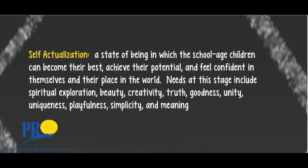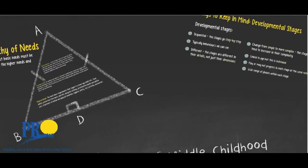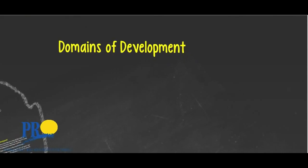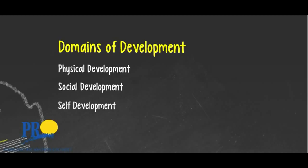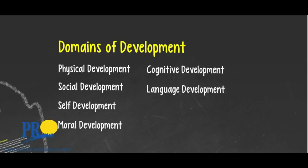We now know that children develop in predictable stages that are progressive, and also that children are individuals who develop at their own rates, influenced by many things: genes, basic needs being met, supportive adults present in their lives, positive peer relationships, opportunities to explore, learn and discover, and pressures or stressors in kids' lives. Taking all of this into consideration, we're now going to look at each of the seven domains of development — physical, social, self, moral, cognitive, language, and creative development — considered together as the whole child.